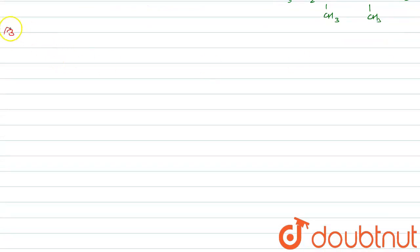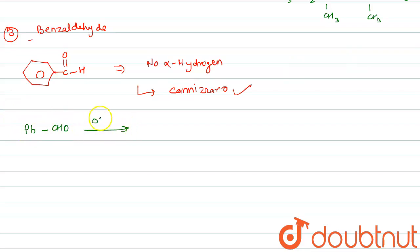Third one is benzaldehyde. In this compound there is no alpha hydrogen, so Cannizzaro reaction takes place. The product is phenyl, CH2OH plus COO minus.